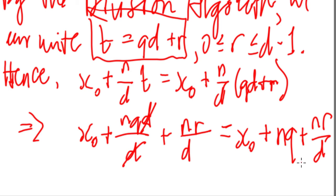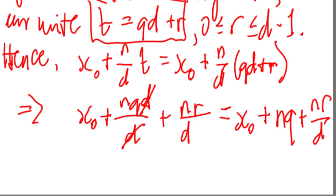And then we write as the last part, which is equivalent to or congruent to x sub 0 plus n over d times r mod n.